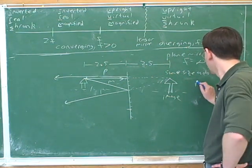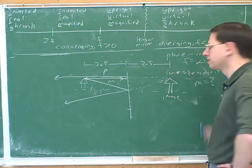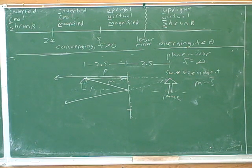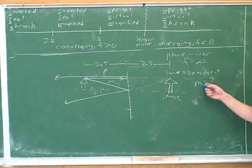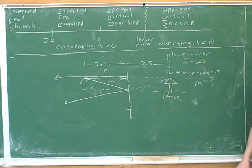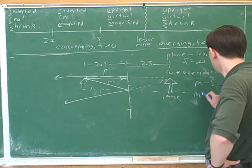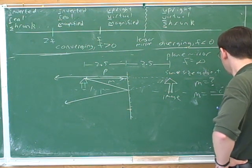How would we find the magnification? The first thing is to remember, we actually have an equation for this. We need to look up our magnification equation. So when you're ready — the magnification equation is: M equals negative image distance over object distance.